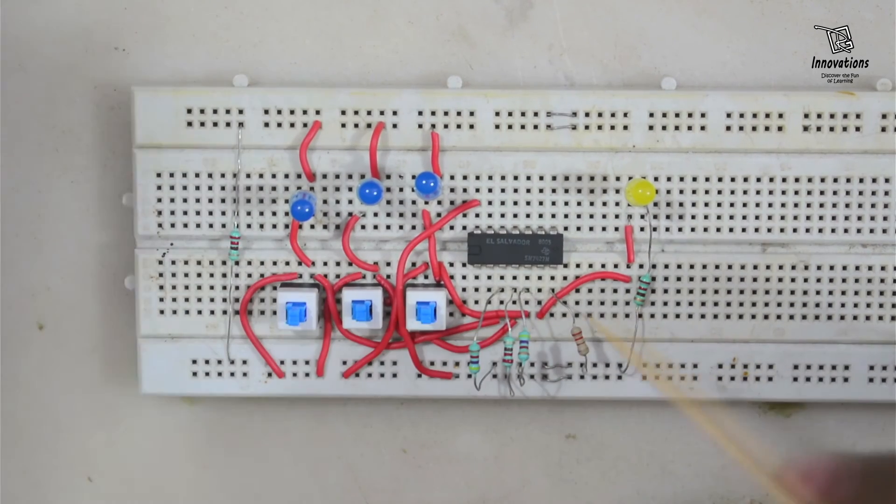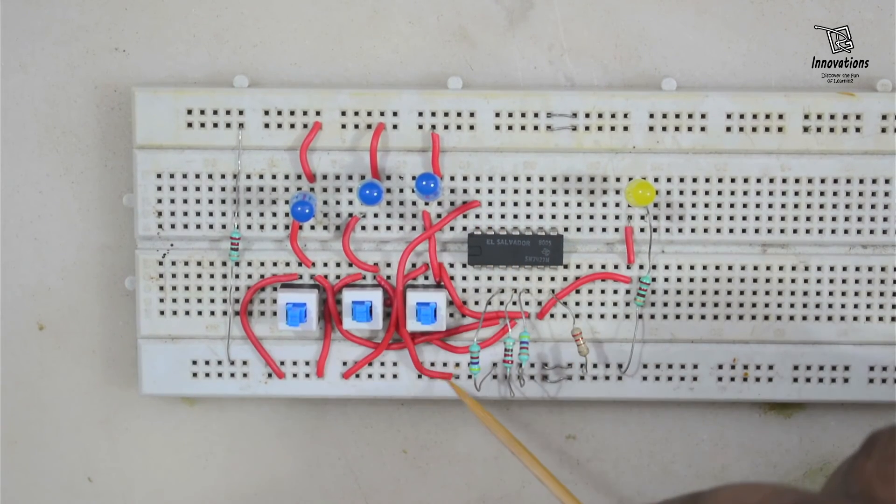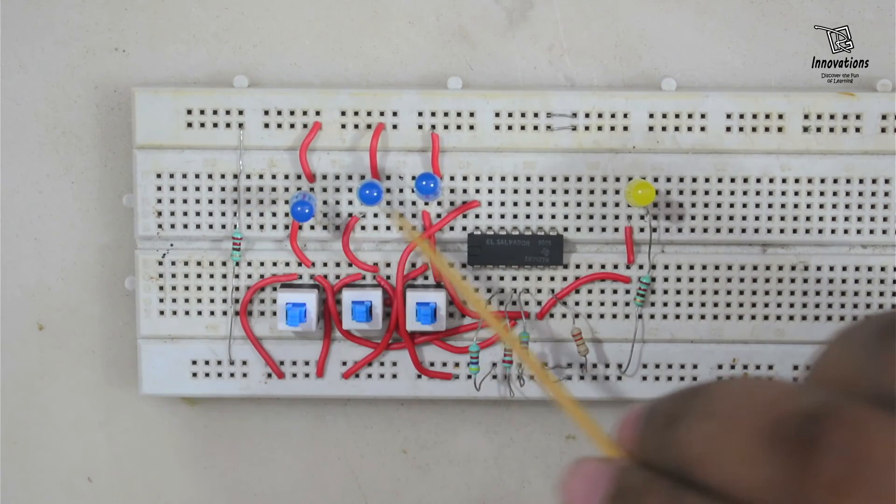So we have put the IC on the board. Here you can see pin number 14 is connected to positive power supply, pin number 7 is connected to negative power supply. A current limiting resistance is used for these three LEDs and another current limiting resistance is used for this LED.